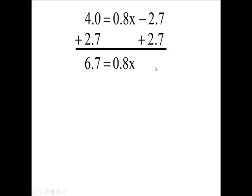Now the variable is x, the coefficient of the variable is 0.8, so I'm going to divide this by 0.8 and divide the 6.7 by 0.8. This over this is 1, and 1 times x is x.